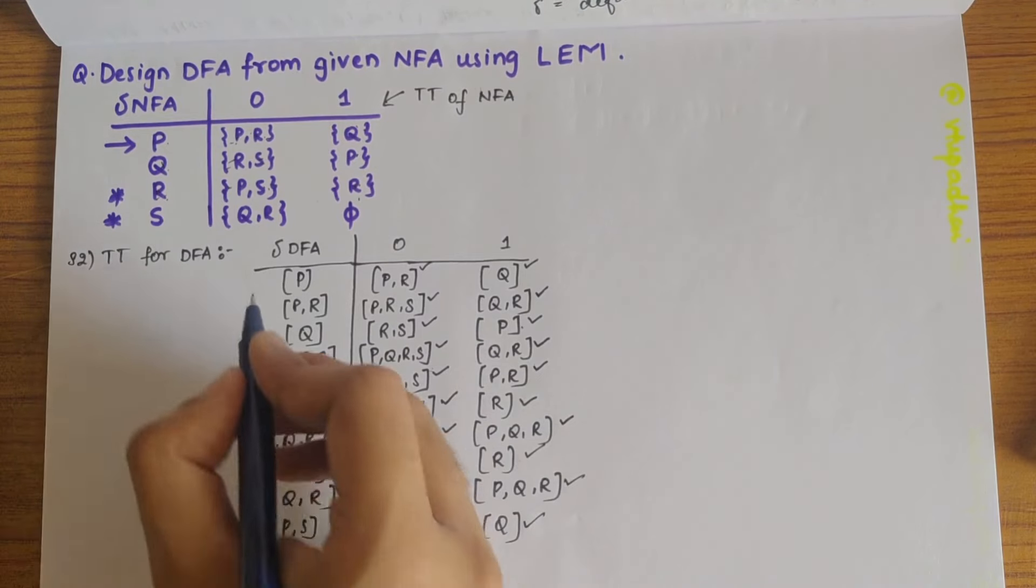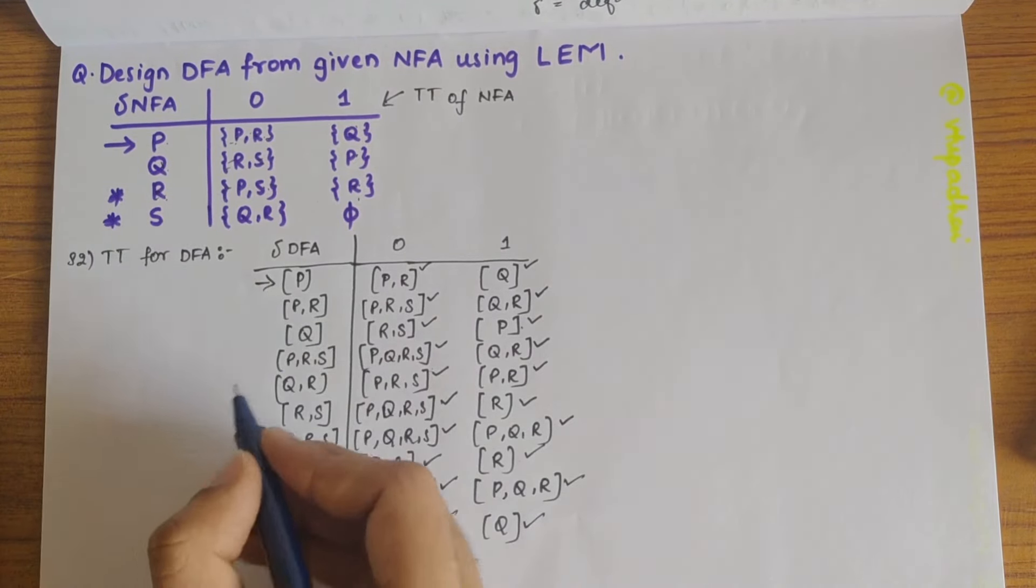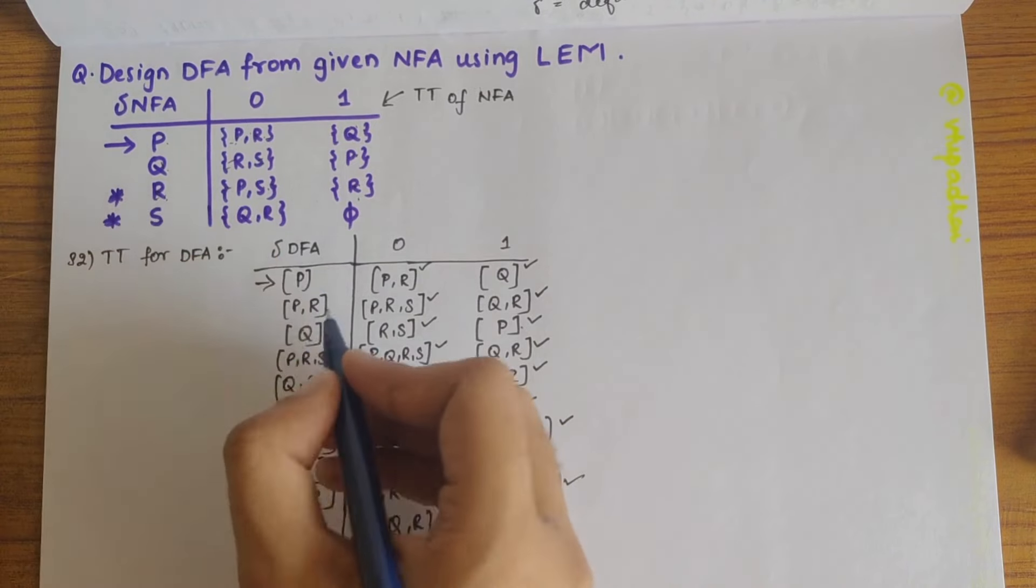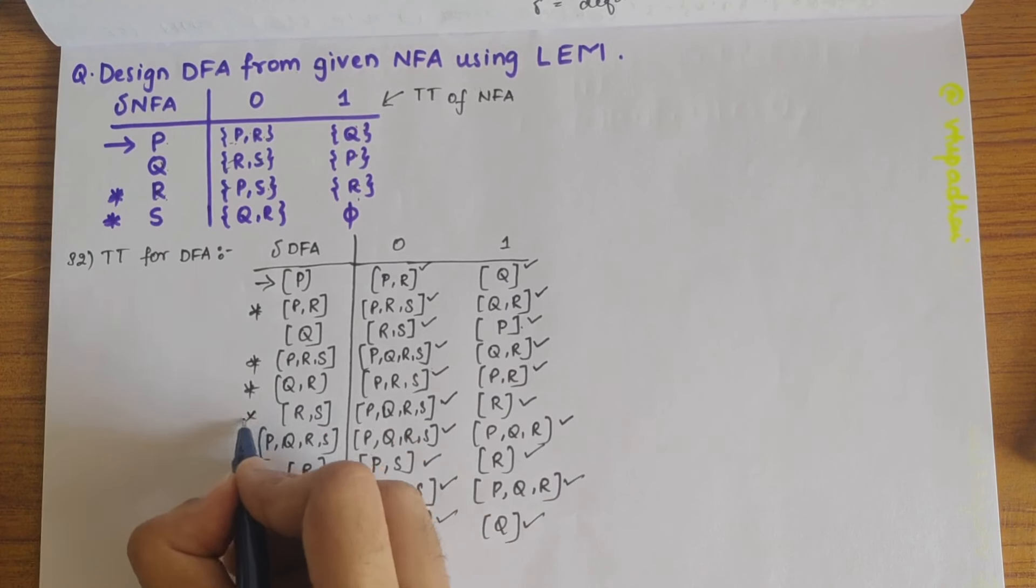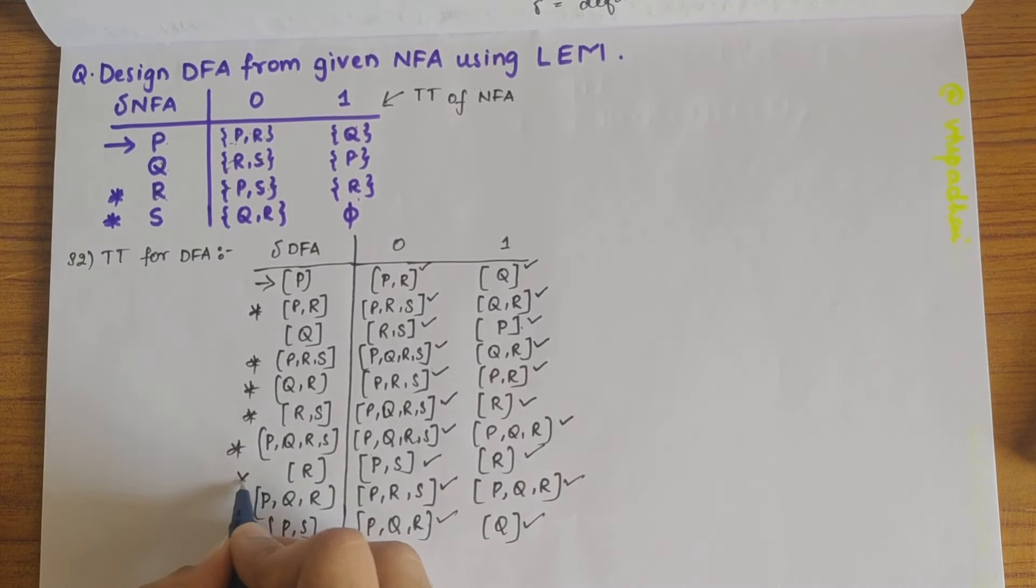So let's mark the initial state here. That is P and final state. Those are R and S. So wherever there's R and S, let's put a star there. So PRS, QR, RS, PQRS, R, PQR and PS.